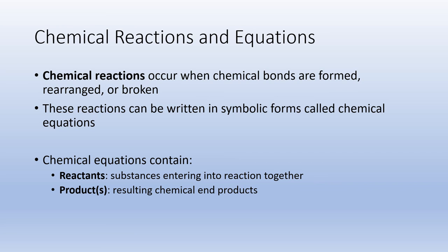The next topic is chemical reactions and equations. These reactions occur when chemical bonds are formed, broken, or rearranged, and they are written in a specific form called a chemical equation. Every chemical equation will always contain a reactant and a product. The reactant or reactants enter into the reaction together, and the end result is the product or products.